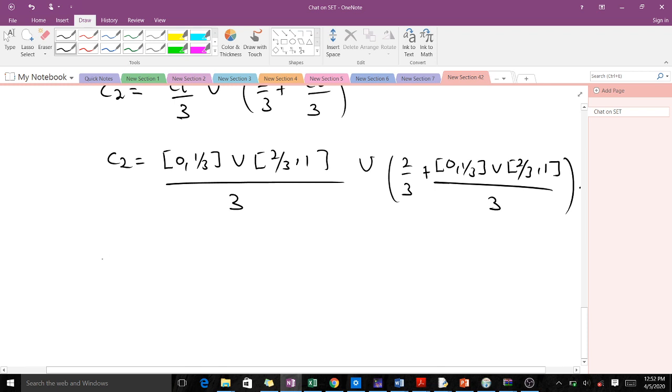When you simplify this we have 0/3 which is 0, 1/3 divided by 3 which is 1/9, then union 2/3 which is 2/9 and 1/3 which is 1/3. We also get union 2/3 plus the same thing, so [0, 1/9] ∪ [2/9, 1/3].